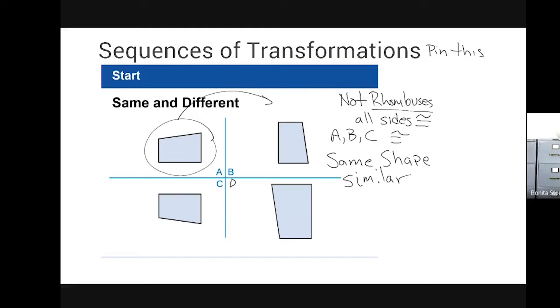Similar has the mathematical symbol, the tilde key. D looks closer, it's larger. So D is similar, it's the same shape but it is a different size. Things that are the same shape and different sizes are called dilations.